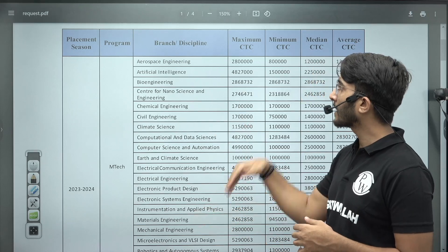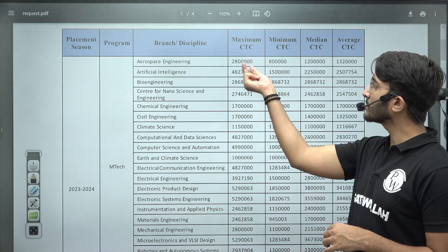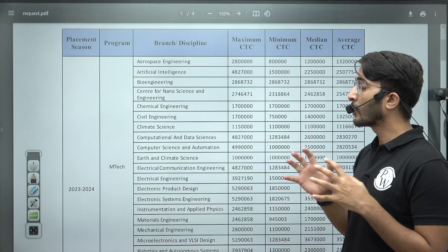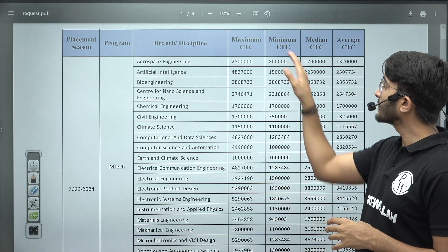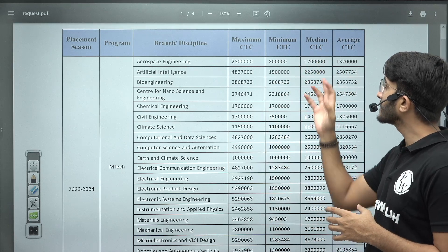If you talk about Aerospace Engineering, the maximum CTC will be 28.28 lakh something, and the minimum CTC is 8 lakh something, and median CTC is 12 lakh something, and average CTC is 13 lakh 20,000 something.